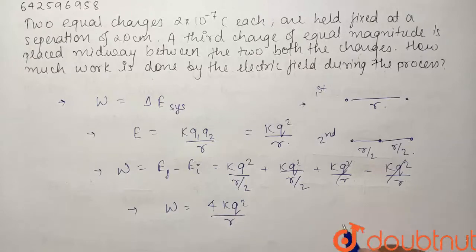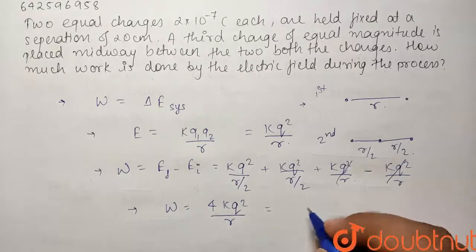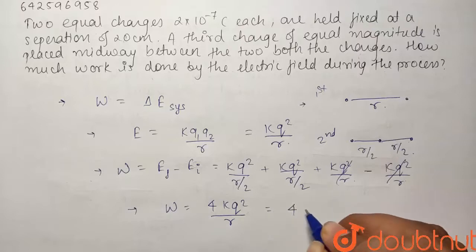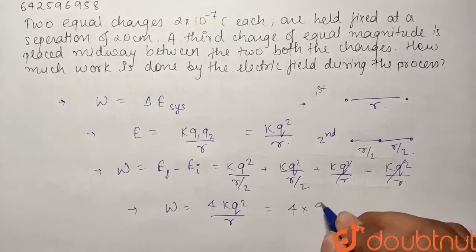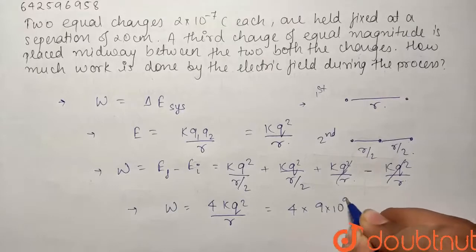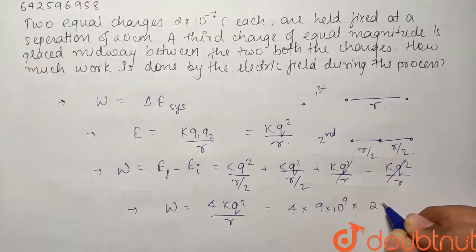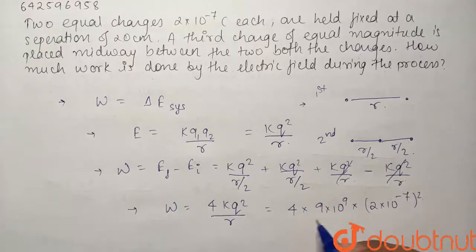So if I just put in the values of all the terms, work will be equals to 4 multiplied by the value of K, that is 9×10⁹, multiplied by the charge squared, that is (2×10⁻⁷)² divided by the distance R.